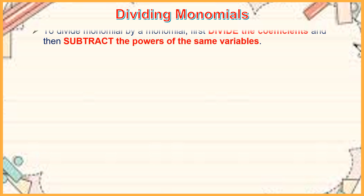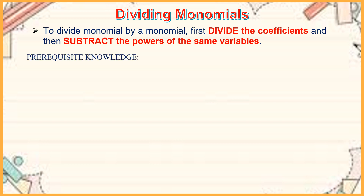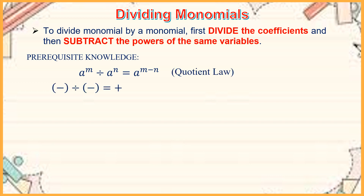Now let us go to dividing monomials. To divide a monomial by a monomial, first divide the coefficients, and then subtract the powers of the same variables. The prerequisite knowledge is: a to the m divided by a to the n is equal to a raised to m minus n. This is the quotient law.